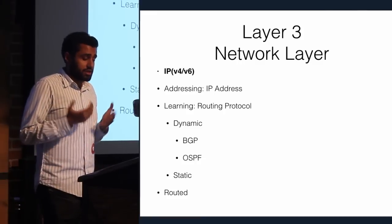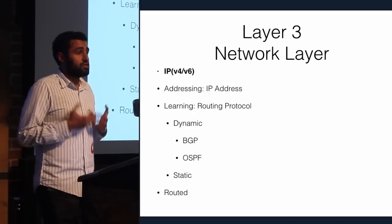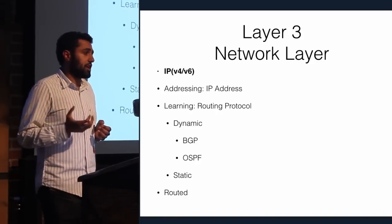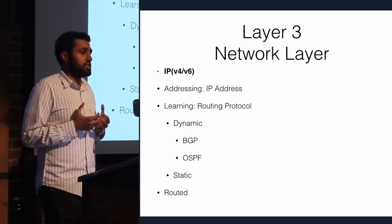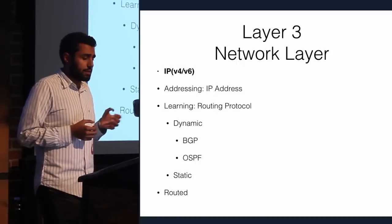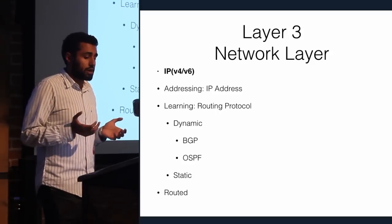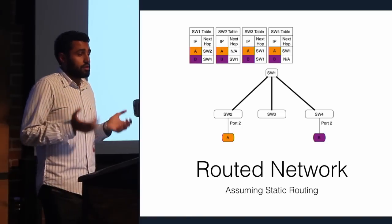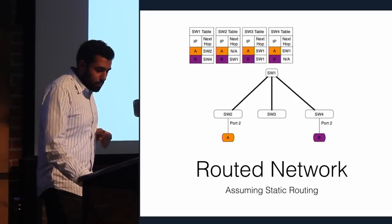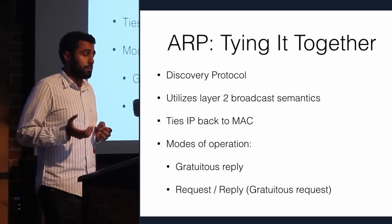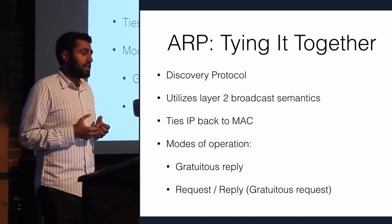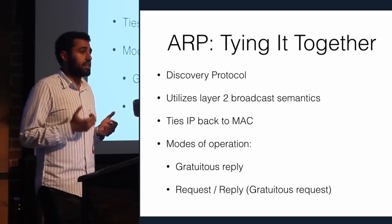Layer three rides on top of layer two. It uses IP addresses to locate things, which are ephemeral and can move around the network. It uses a router network where devices only make local decisions and don't need to be aware of the entire topology. The paper talks about OSPF, a link state dynamic protocol, though you can also pre-program devices statically. The protocol ARP ties layer two and layer three together, using broadcast semantics to determine IP-to-MAC address relationships — either gratuitous or non-gratuitous when a new device comes on the network.